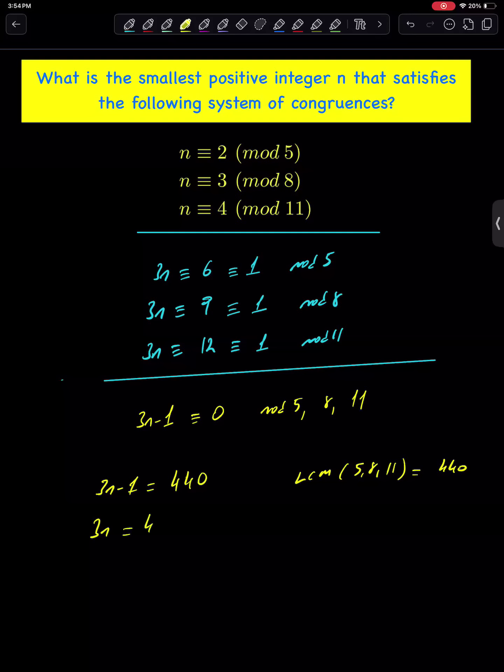3n is equal to 441, n is equal to 147. 147 is the smallest number satisfying the three congruencies.